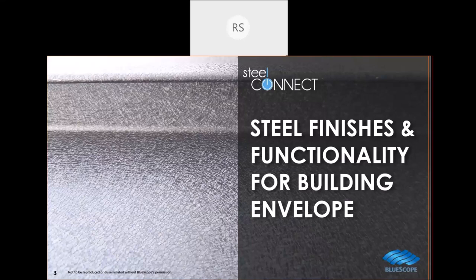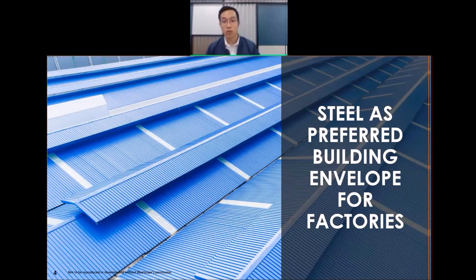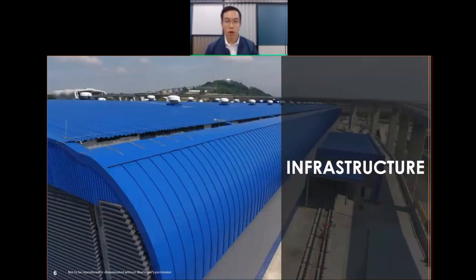Our topic today will be on different steel finishes and their respective functionality. Steel has been the preferred material for building envelopes - traditionally used for factories as well as warehouses because of its large coverage area and relatively lightweight solution as a building material.